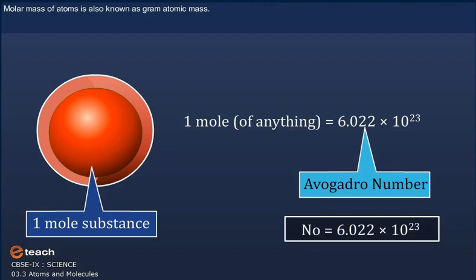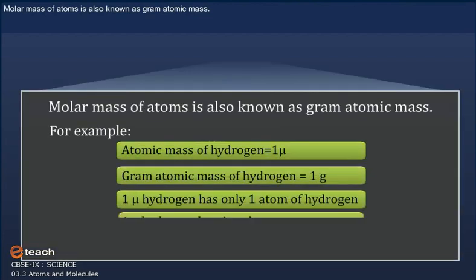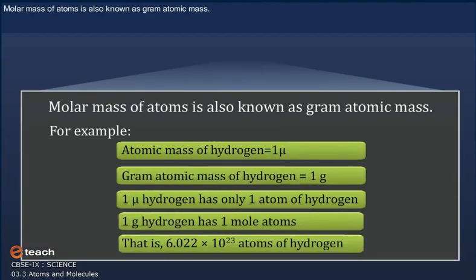Molar mass of atoms is also known as gram atomic mass. For example, the atomic mass of hydrogen is 1u, so the gram atomic mass of hydrogen is equal to 1 gram. 1u hydrogen has only 1 atom of hydrogen, while 1 gram of hydrogen has 1 mole of atoms, that is 6.022×10²³ atoms of hydrogen.